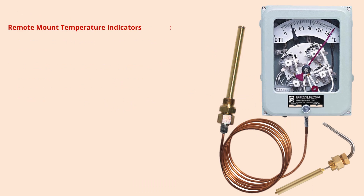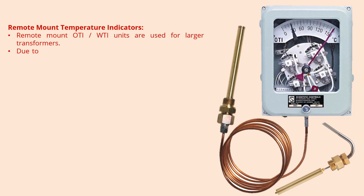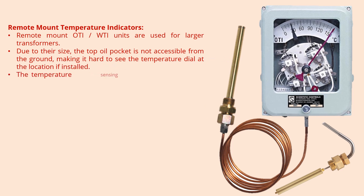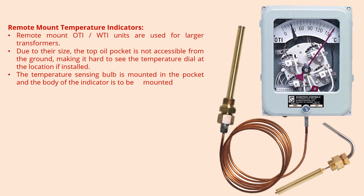Remote Mount Temperature Indicators — OTI and WTI units are used for large transformers. Due to their size, the top oil pocket is not accessible from ground, making it hard to see the temperature dial at the installed location. The temperature sensing valve is mounted in the pocket and the body of the indicator is to be mounted at eye level in another location, so the length of the capillary tube needs to increase.